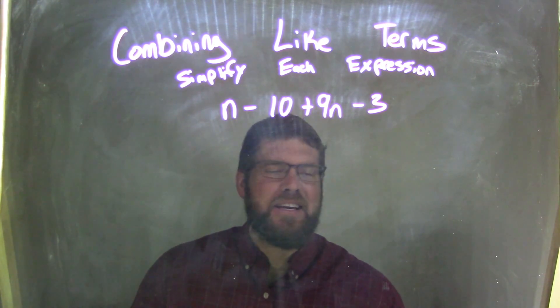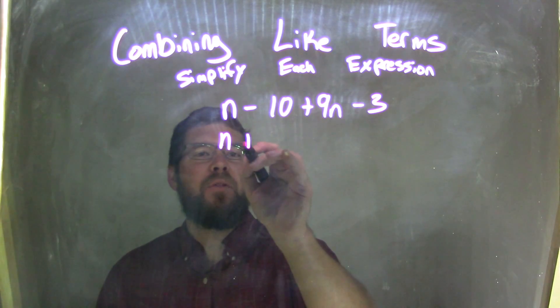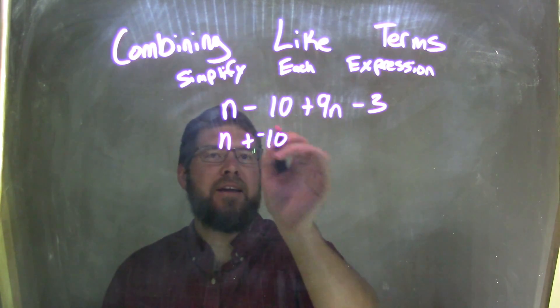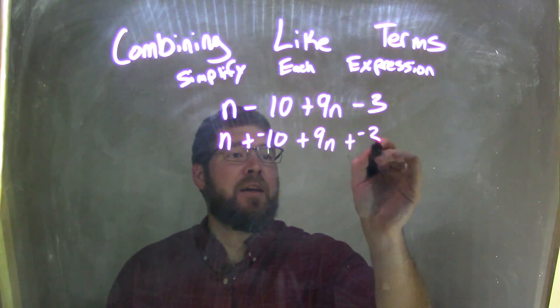And so we have to rearrange these. And for me, it's easier to see if I rearrange these as adding a negative, and that's what I'm going to do. So I'm going to rewrite this to be n plus a negative 10, so adding a negative instead of subtraction, plus 9n instead of minus 3, adding a negative 3.